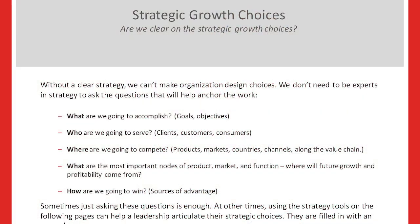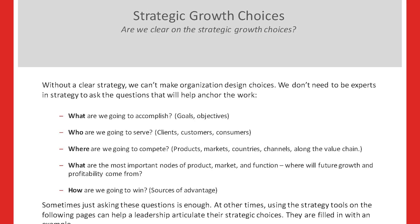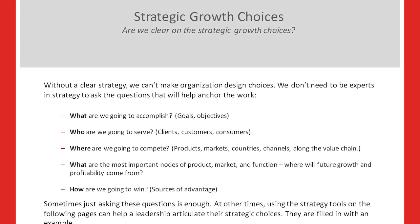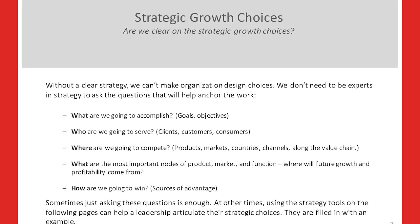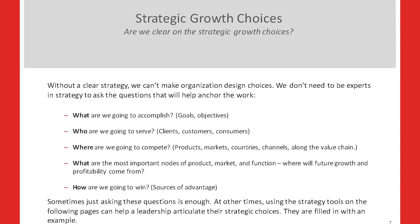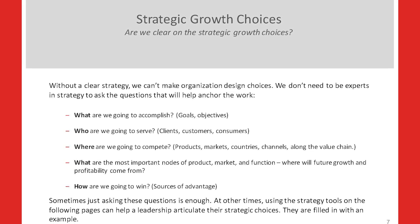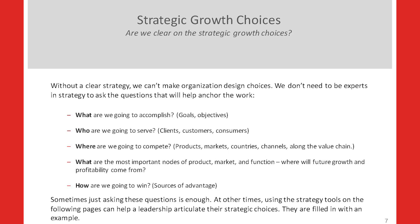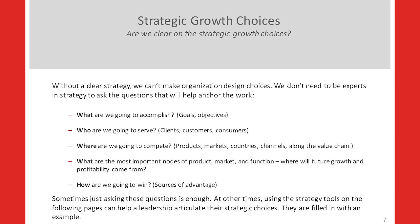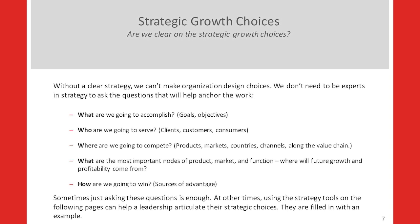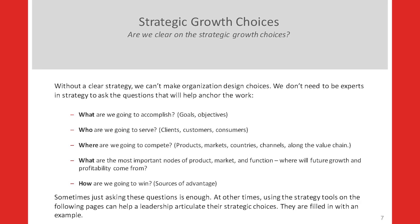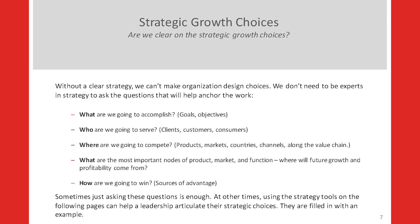The first question we ask is: are we clear on the strategic growth choices? We often use McKinsey's three horizon model, but there are many strategy models to use. Most importantly, we're looking for the alignment of the executive team around where they're going to make investments — which countries, product lines, and the intersections of where those come together are most important for the business. Being clear on the growth choices helps set the frame for organizational decisions.